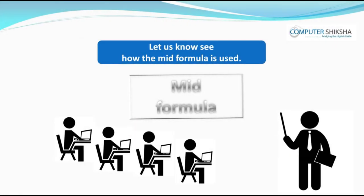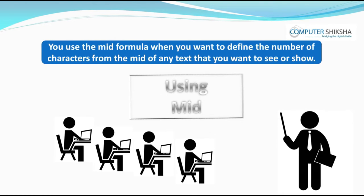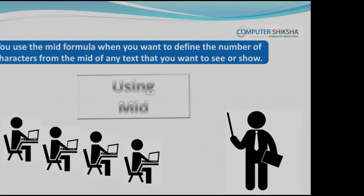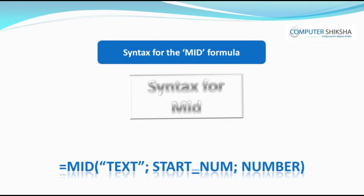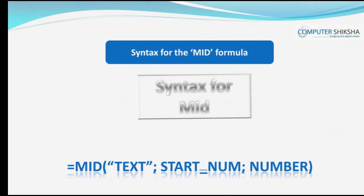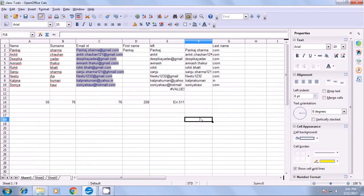Let us now see how the MID formula is used. You use MID when you want to define the number of characters from the middle of any text. The syntax is: equal to MID, open bracket, text in inverted commas, semicolon, start in inverted commas, semicolon, number in inverted commas, close bracket. Let us watch the video and see how the MID formula is used.